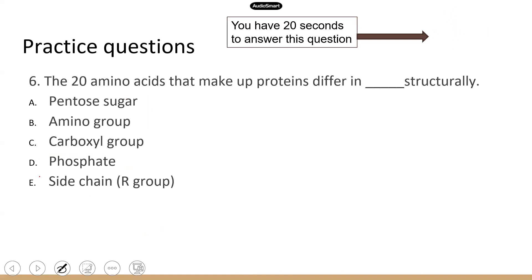The 20 amino acids that make up different proteins differ only in their side chain, also known as the R group. Everything else — the amino group and the carboxyl group — is identical between the 20 different amino acids. For amino acids, there is no pentose sugar and no phosphate. The correct answer is the side chain, or R group.